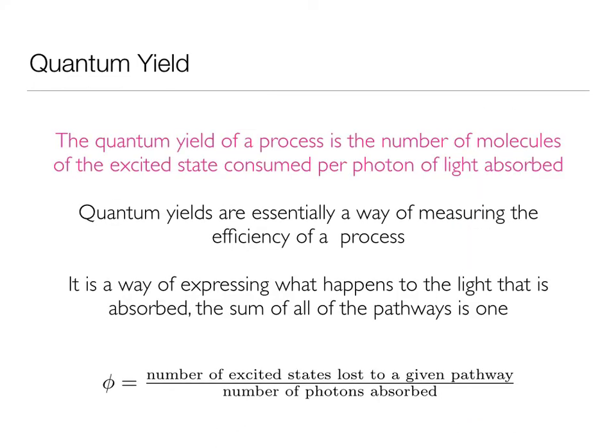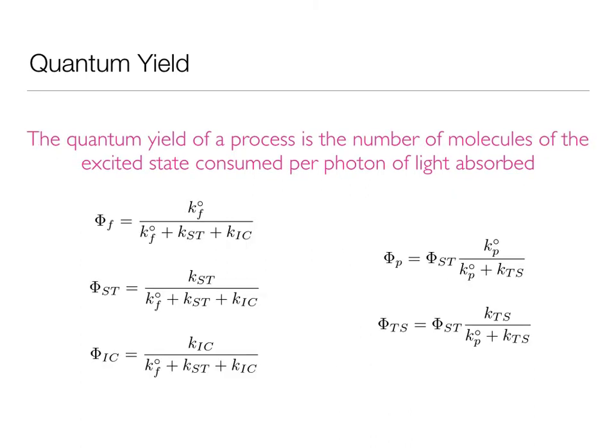So my quantum yield formally is the number of excited states lost to a given pathway divided by the number of photons absorbed, in other words the number of excited states that I make. And I can look at quantum yields for any particular process.